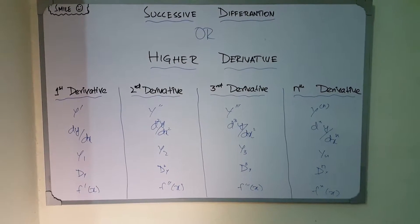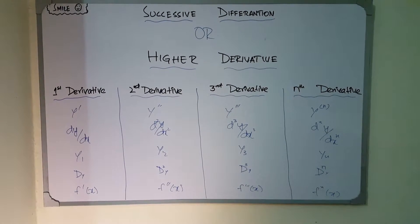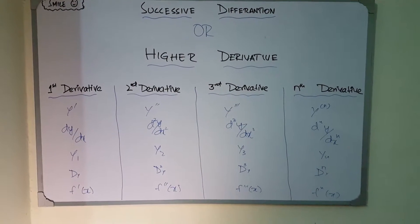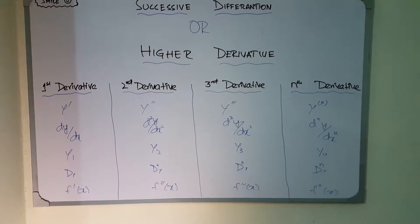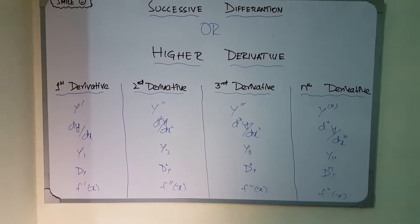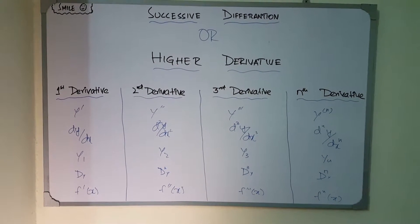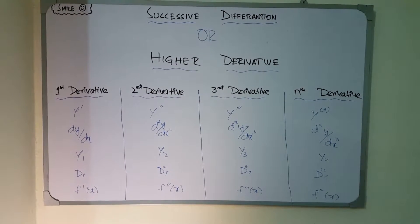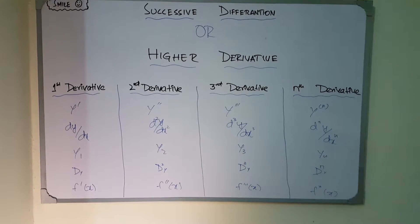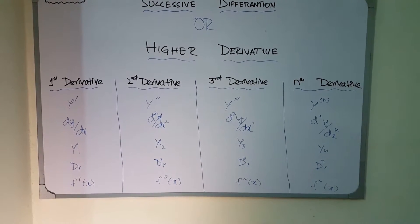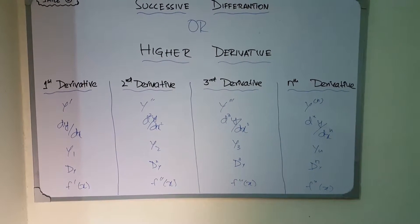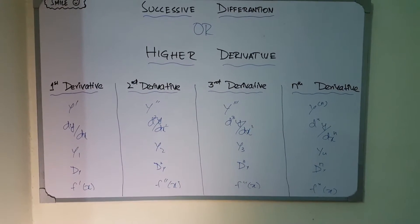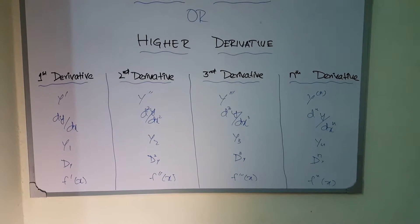Welcome. Today our lecture is about successive differentiation, or higher derivatives. Sometimes we will be given a question to find the second order derivative, third order derivative, or any nth order derivative. This case is basically called a higher derivative or successive differentiation. It includes first, second, third, and nth order derivatives — where n can be any number: one, two, three, four, five, six, or even a thousand.